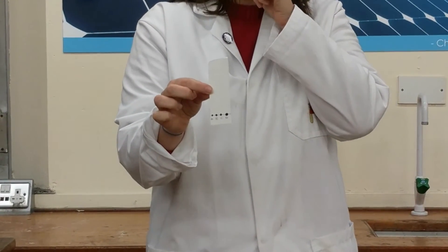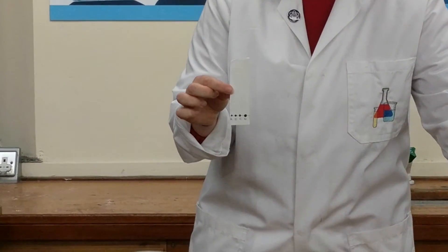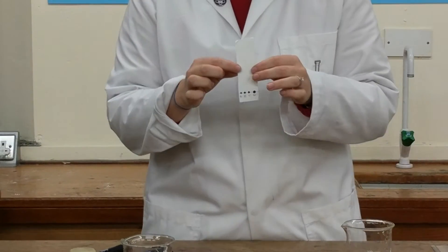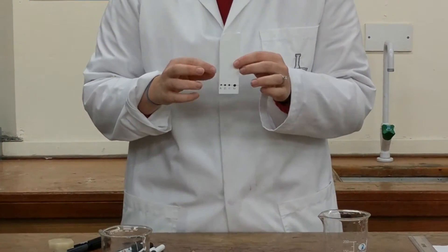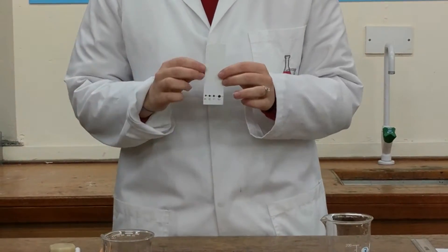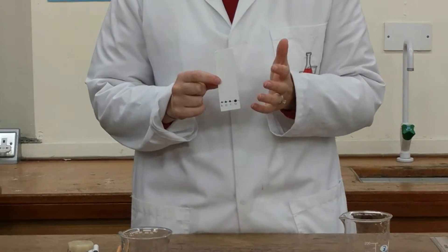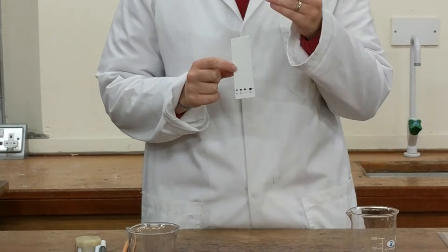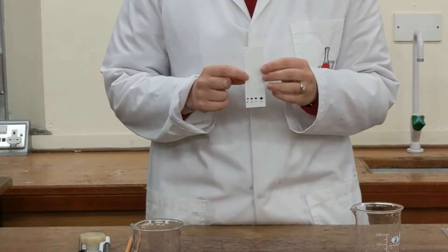Now this is ready to go into one of our solvents. These inks are going to separate into their different components, because they are made of a number of different components. Each of them have a different solubility, so they will travel up the paper by different amounts.